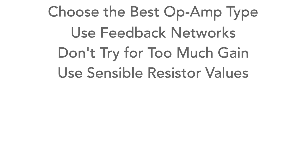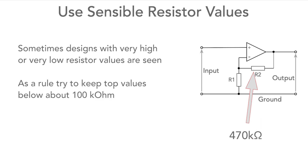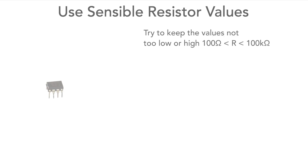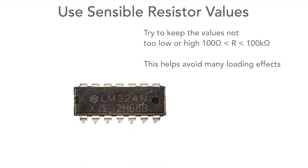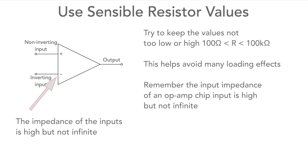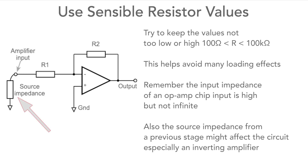Then make the resistor values sensible. So often I've seen people using resistors of half a megaohm or more in the feedback. As a rule, I try to keep them below about a hundred kilohms in the feedback loop, and in other positions say above a hundred ohms or so, but dependent upon the requirements of the circuit. Just keep them not too low and not too high — this avoids any loading effects that might occur. Remember the input impedance of the op amp chip itself is high but not infinite, and with low resistor values other effects may occur. Source impedances of the previous stage and the like need to be considered.